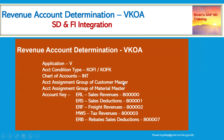The revenue account determination is done based on VKOA settings — that is the VKOA transaction code — with application V, account condition type KOFI or KOFK for controlling, chart of accounts, account assignment group of customer master data, account assignment group of material master data, and the account key. The standard setup uses condition type KOFI, chart of accounts INT, account assignment groups for customer and material, followed by the account keys.